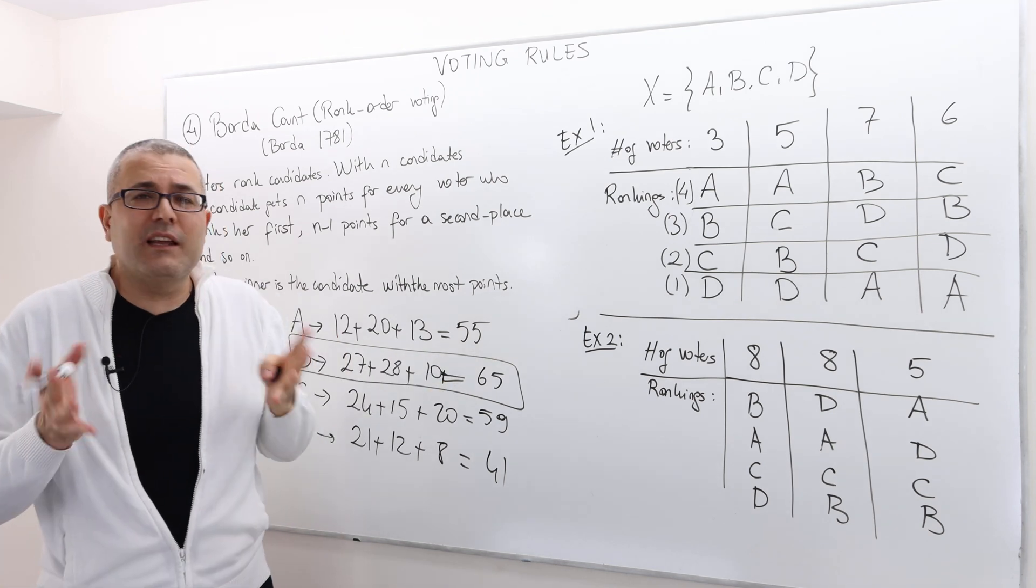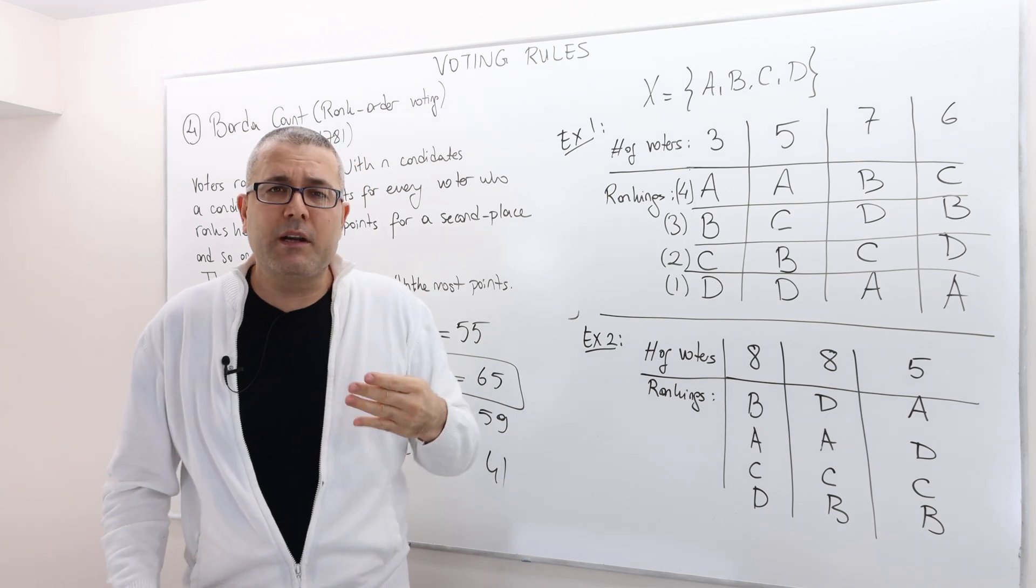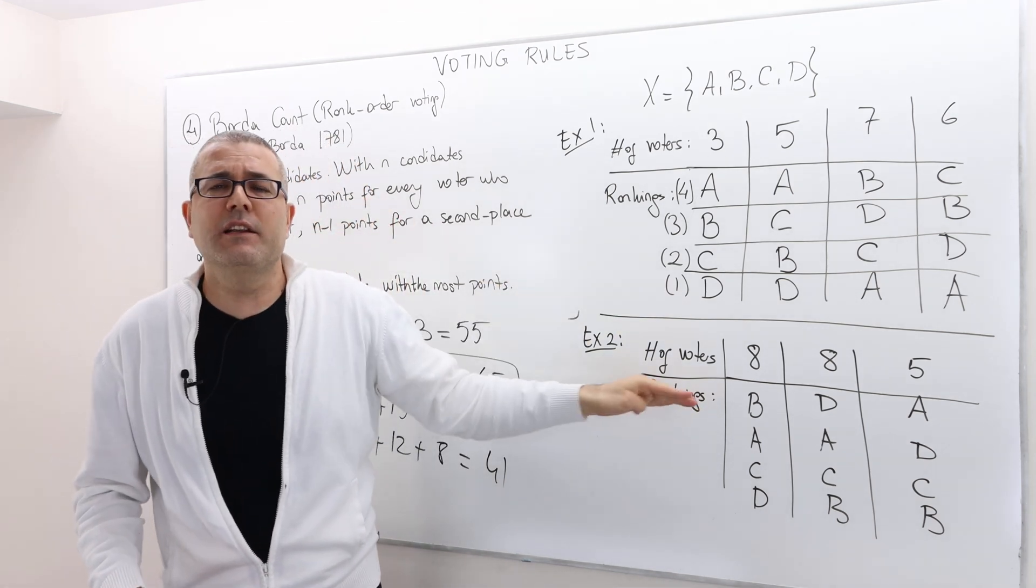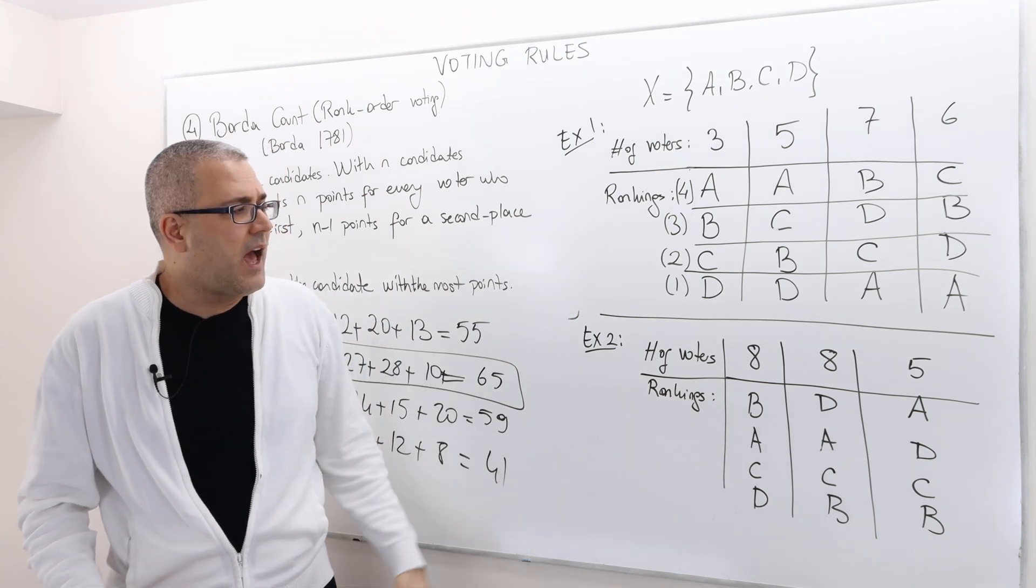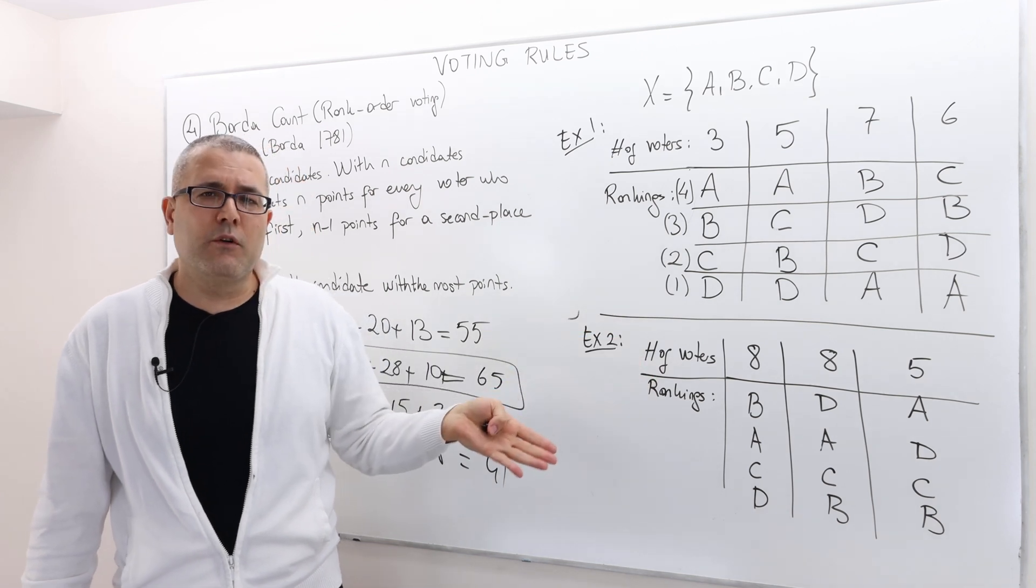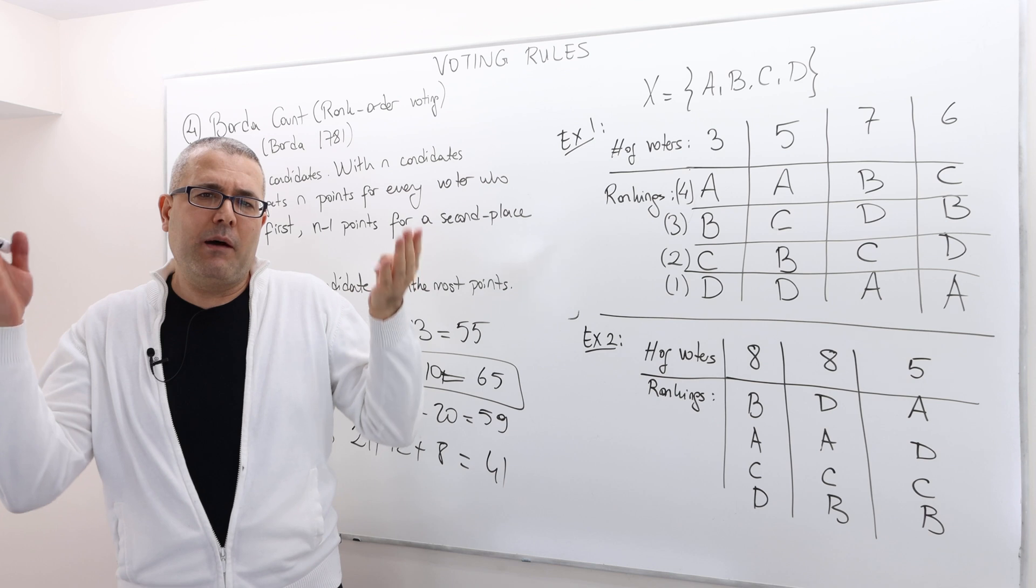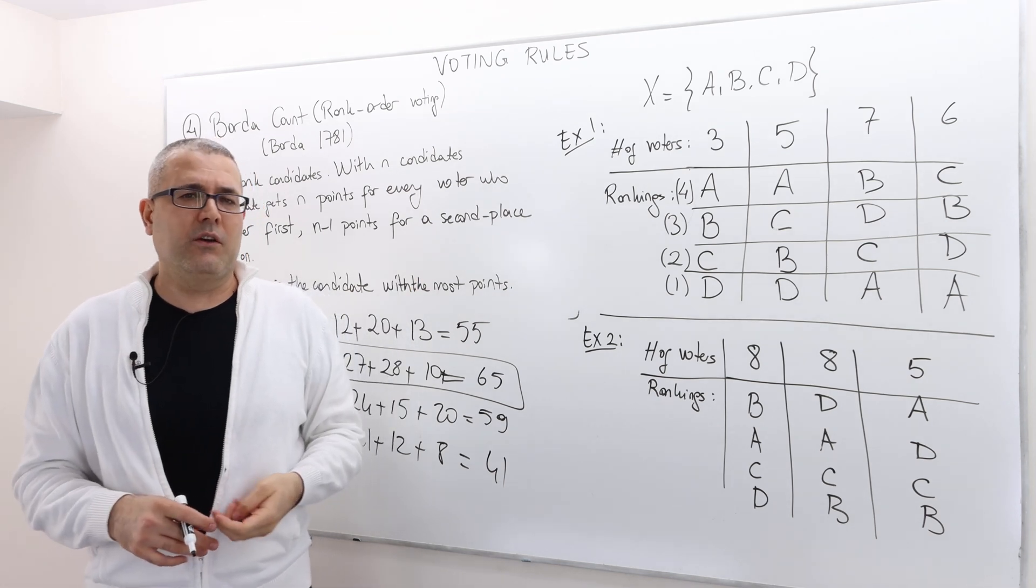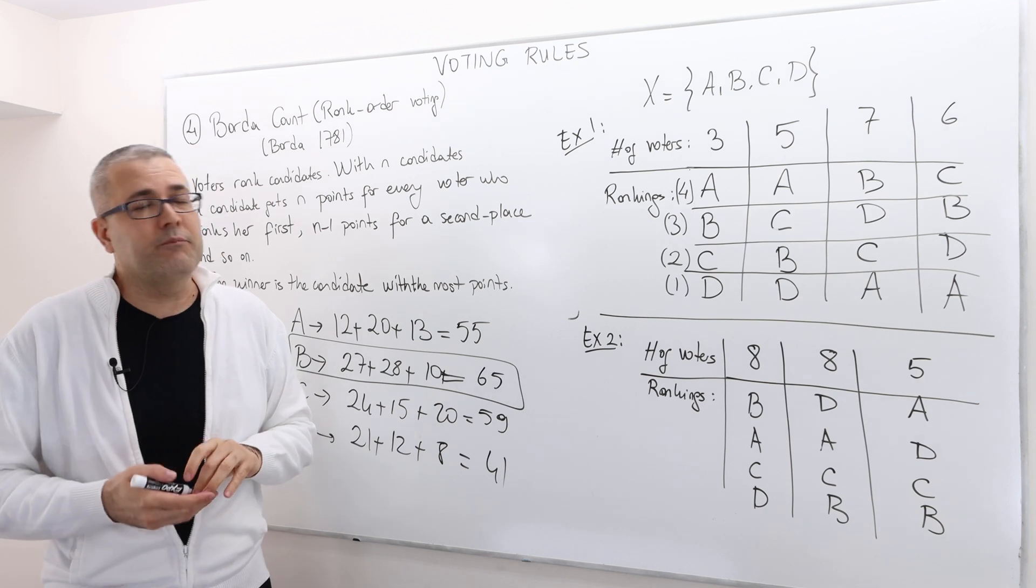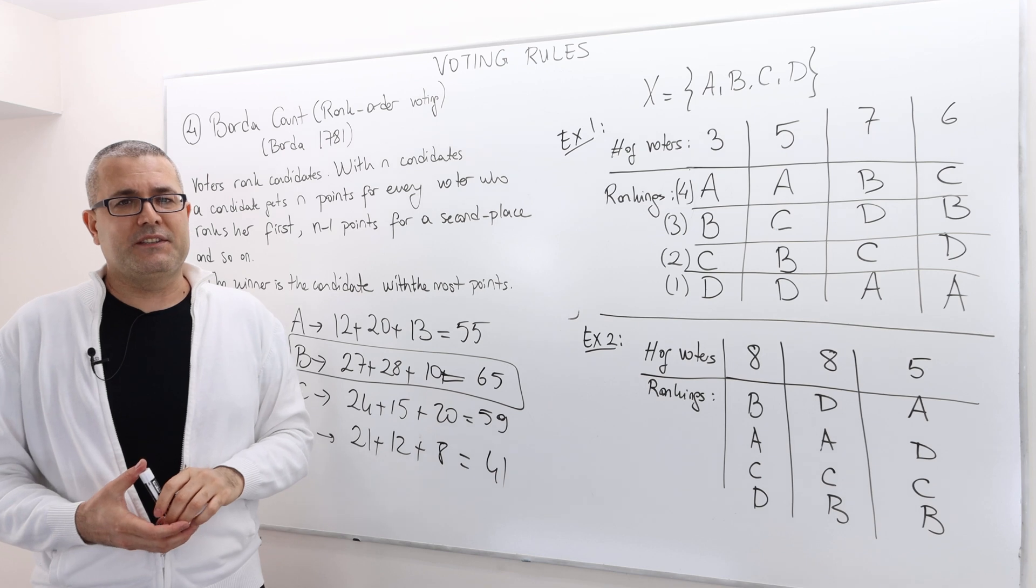Well, what about this case? Exactly the same thing. Four points, three points, two points, one point. Remember, as long as we have n many candidates, n, n minus one, n minus two, etc. And then all we have to do is just multiply the points and the number of voters and the rank of the candidate, add them up, and calculate the Borda count for each candidate. And then the candidate who gets the highest point becomes the winner. As simple as this.